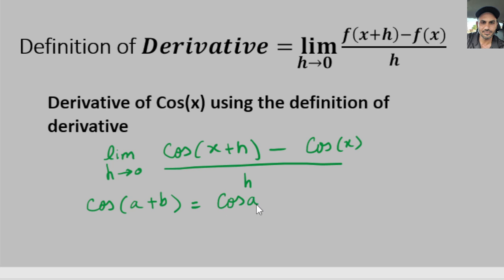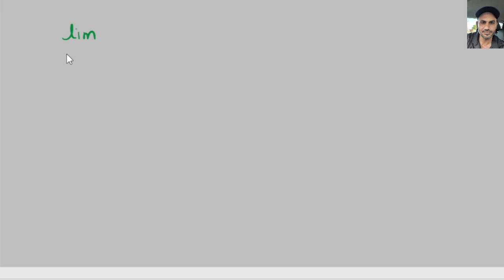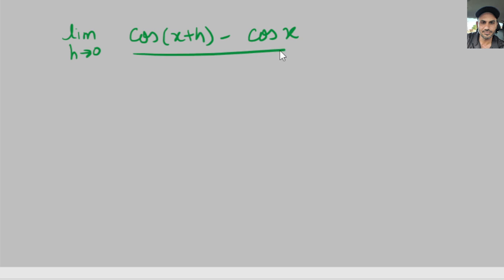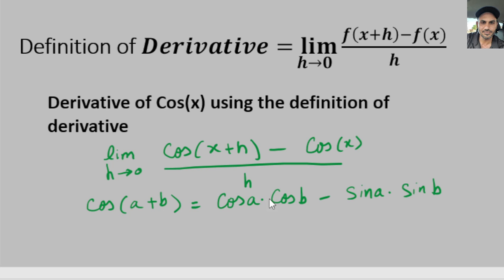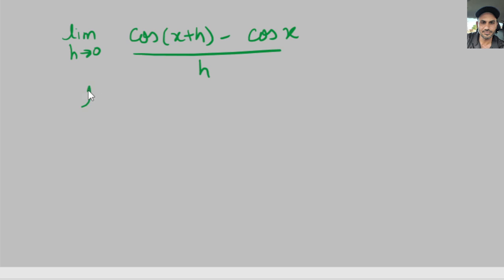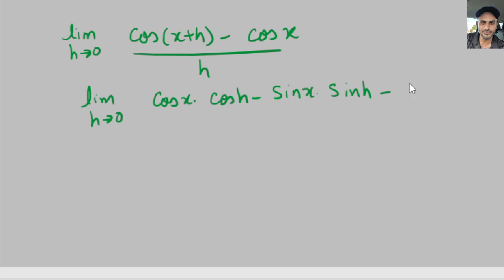We know that cosine of a plus b equals cosine of a times cosine of b minus sine of a times sine of b. I'm going to plug in this property right here, so we get the limit as h goes to zero. Here we have cosine of x plus h minus cosine of x over h, and now we expand cosine of x plus h using this property. So we get the limit as h goes to zero of cosine of x times cosine of h minus sine of x times sine of h, minus cosine of x, all over h.